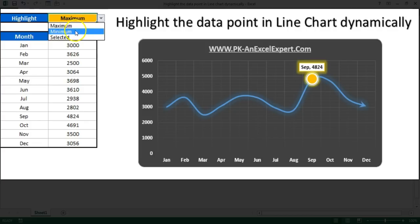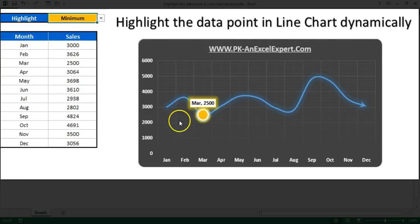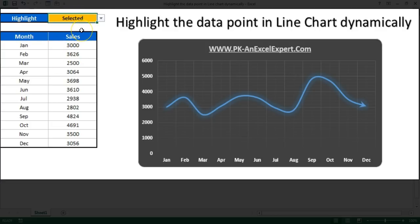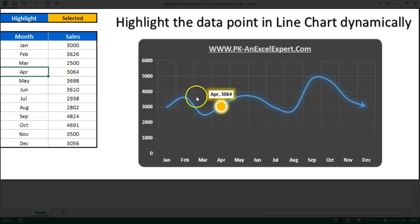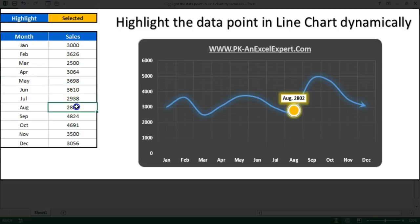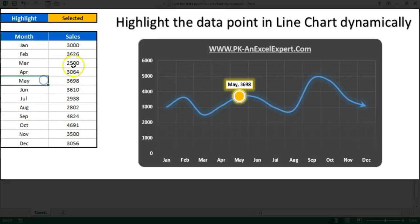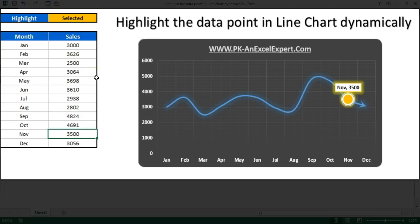If you want to highlight the minimum data point, you can select minimum and that particular month will be highlighted. If you want to highlight a specific data point, select 'Selected' in this drop-down, then click anywhere in the table on the row you want to highlight. For example, clicking on April will highlight that particular data point. So we will learn how to create this functionality in the line chart.